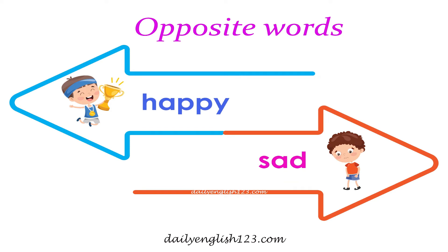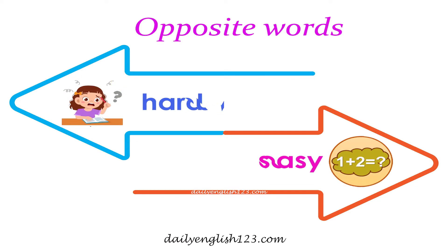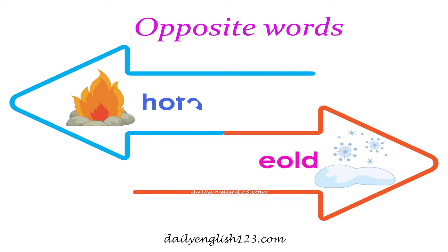Number 7: Happy is the opposite of sad. Number 8: Hard is the opposite of easy. Number 9: Hot is the opposite of cold.